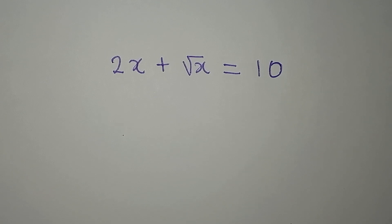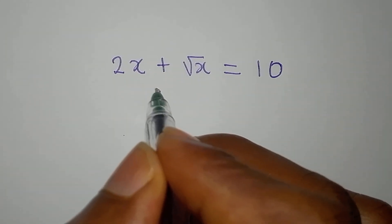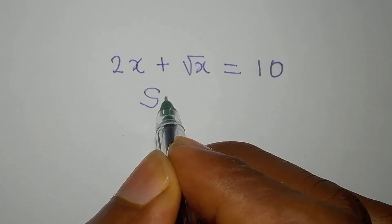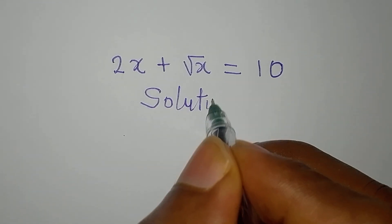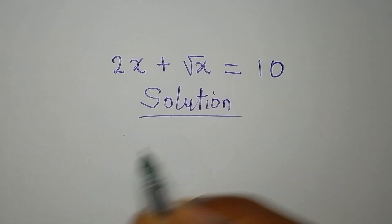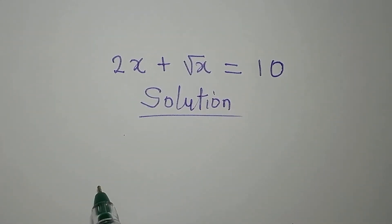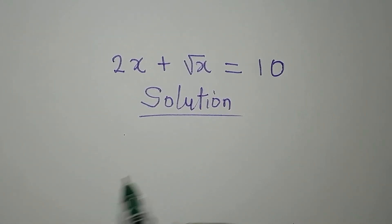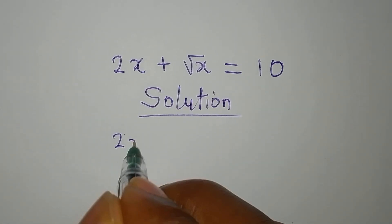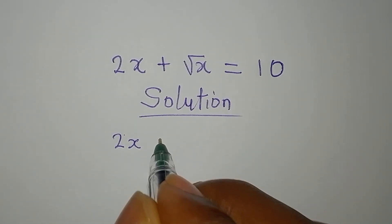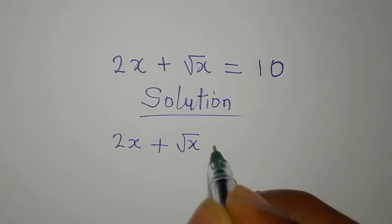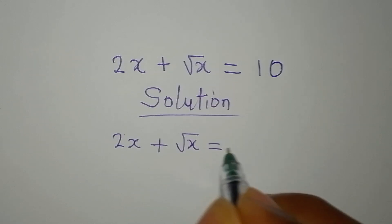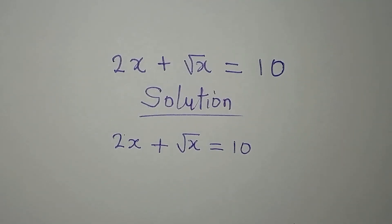Hello everyone. Let's provide the solution to this problem. We have 2x plus square root of x equals 10.